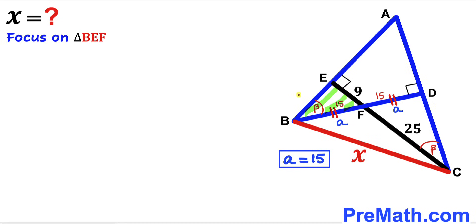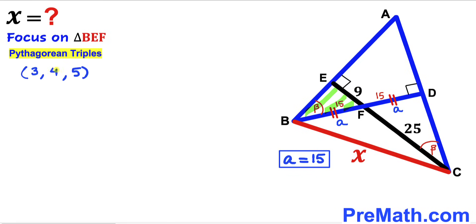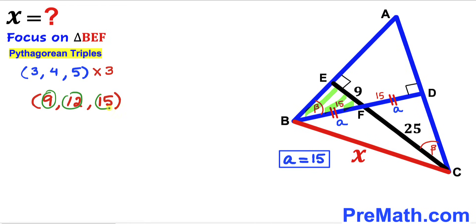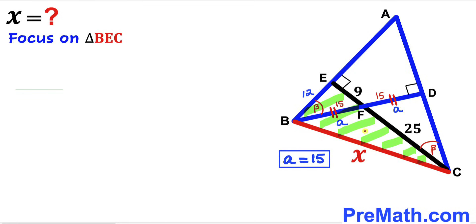Now let's focus on right triangle BEF, whose known side lengths are 9 and 15. Recalling Pythagorean triplets: 3-4-5, multiplied by 3 gives 9-12-15. Since our numbers are 9 and 15, the missing side BE has got to be 12 units.